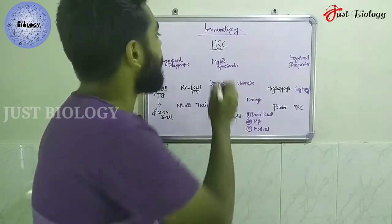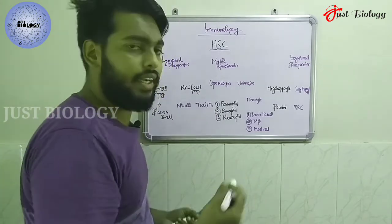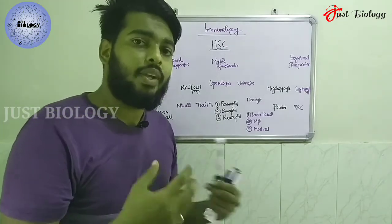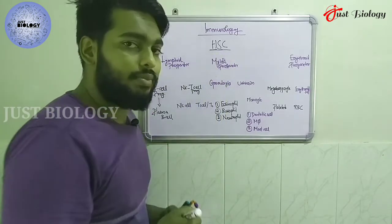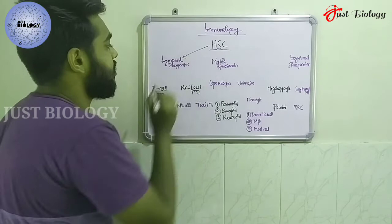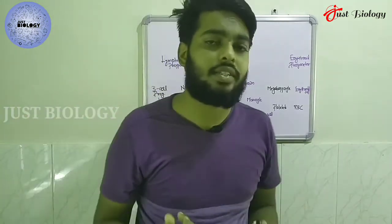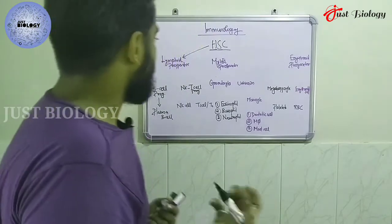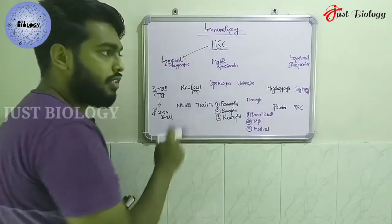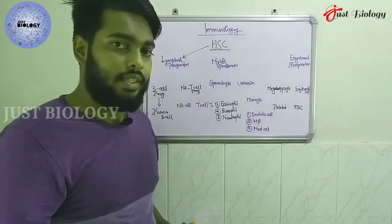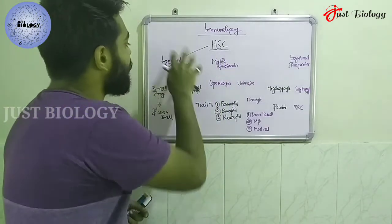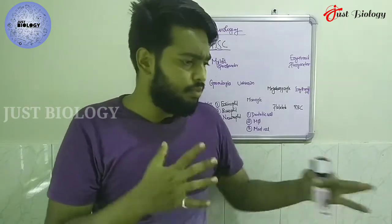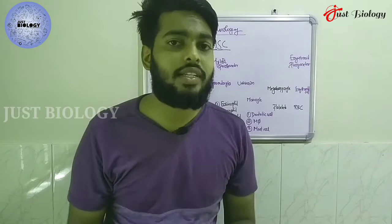The first cell which is synthesized by hematopoietic stem cells is the lymphoid progenitor cell. These are precursor or progenitor cells, and they will also differentiate further. The lymphoid progenitor cell is the first cell which arises from the hematopoietic stem cells. Out of all cells, the lymphoid progenitor will be the first one which is resistant towards the pathogen, so they are the most abundant class of cells.